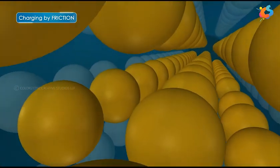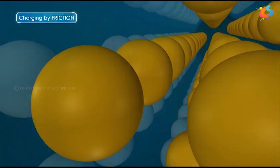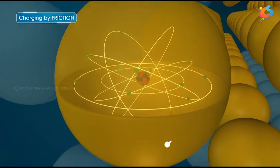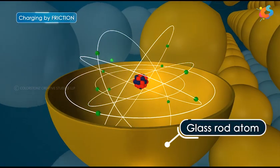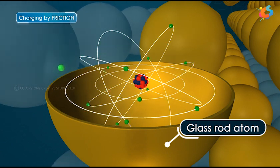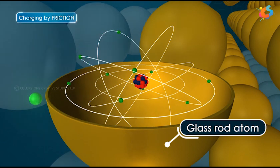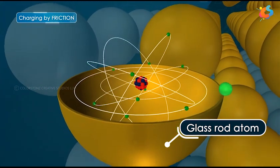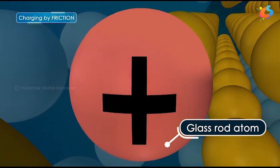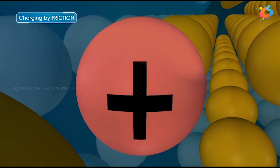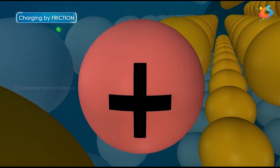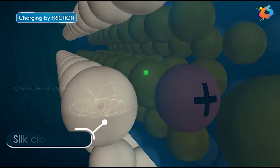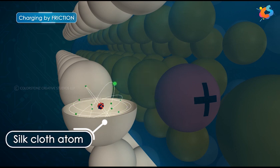This happens because when a neutral glass rod is rubbed with neutral silk cloth, the energy spent in rubbing is utilized to remove the outermost electron from the atoms. The glass rod loses electrons while rubbing, and due to deficiency of electrons, the atoms of the glass rod develop positive charge. These electrons are gained by the atoms in the silk cloth, and due to excess of electrons in the atoms of the silk cloth, the silk cloth develops negative charge.